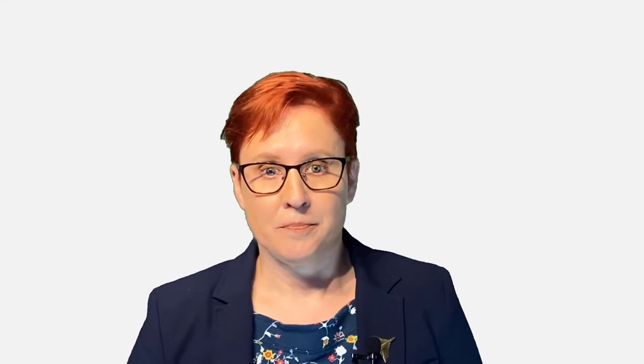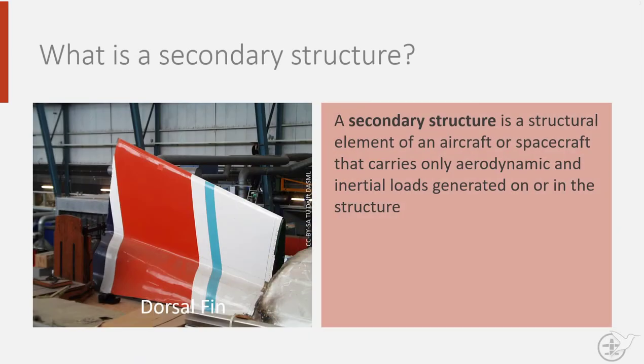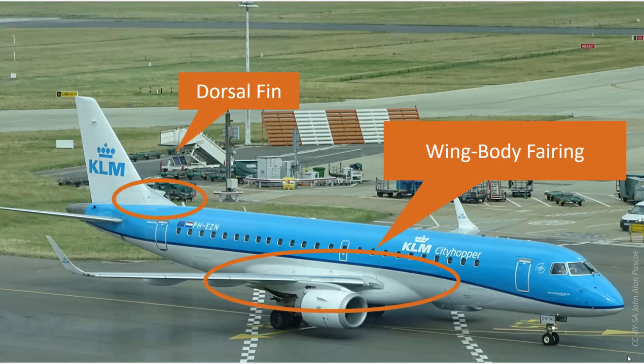When we look at the airframe, we can divide it into primary and secondary structures. The primary structure is formed by those parts of the aircraft or spacecraft that in case of severe damage would cause the entire aircraft to fail. Think here of the fuselage, the wing, or the empennage — that is the tail of the aircraft, consisting of a horizontal and vertical tail plane. Secondary structures are elements that carry only aerodynamic or inertia loads generated on or in the secondary structure itself. Here you can think of the wing-to-body fairings, the dorsal fins that serve purely aerodynamic purposes, the radome, and in certain cases the winglet. To decide if a structure is primary or secondary, it is important to carry out a risk assessment of the consequences of the structure failing.